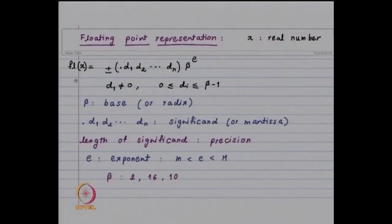Let me recall the floating point representation of a real number and what happens if you subtract two numbers which are about the same. The floating point representation of a real number x has the standard form: plus or minus dot d1, d2, ..., dn, times beta raised to e.